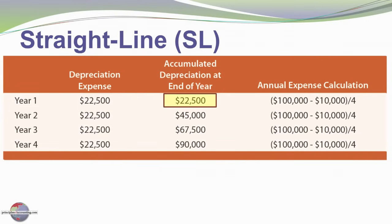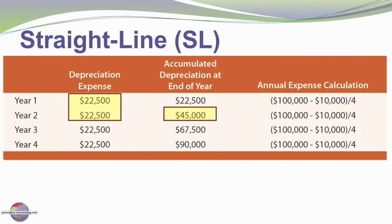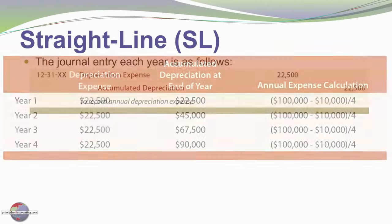At the end of the first year, our accumulated depreciation in the aggregate will be $22,500. The next year our calculations repeat and we have an additional $22,500 of depreciation. Cumulatively now we have $45,000 of accumulated depreciation to be reported as an offset against the asset's cost in the balance sheet. And this process would continue for each of the next two years.